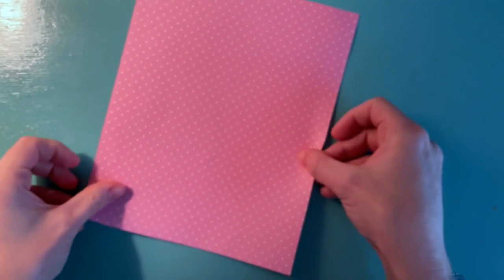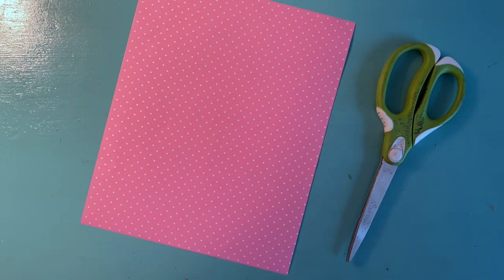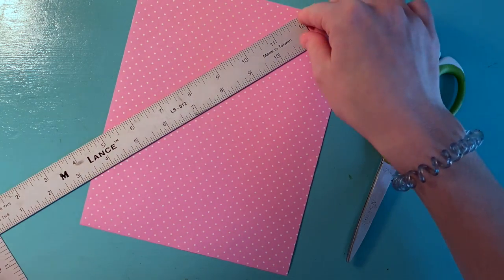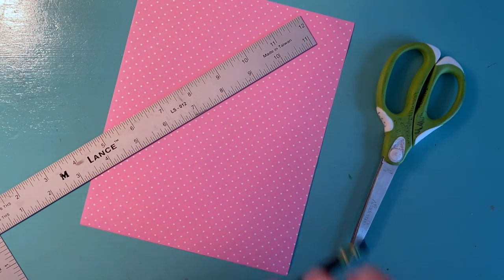To get started, you're going to need some paper. I'm using patterned paper, but if you don't have patterned paper, that's okay. If you want your paper to be colorful, you can always color one side of it. You're also going to need some scissors. If you would like to measure, I would grab a ruler and a pencil.